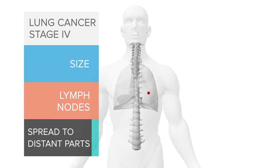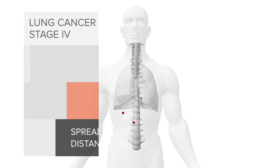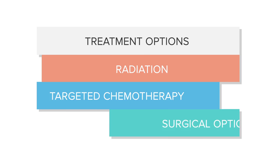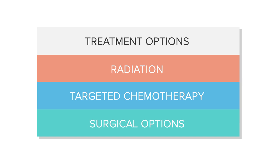Stage four lung cancer is when the cancer has spread to distant sites. It depends on the location, the extent of the spread, and sometimes it may have spread to more than one organ. This is a very exciting time in treating stage four lung cancer — it is not what it used to be. With interventional radiology, interventional bronchology, some limited surgical options, and targeted chemotherapy, quality of life and survivorship can definitely be better.